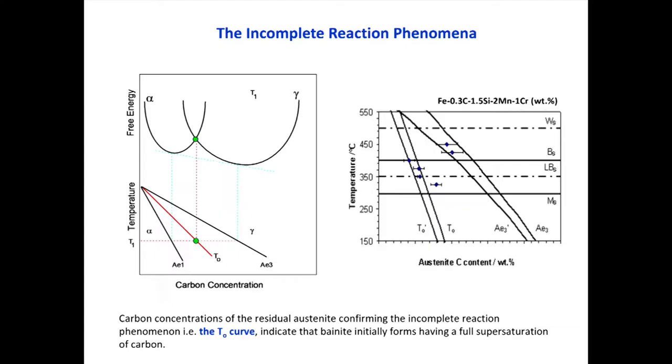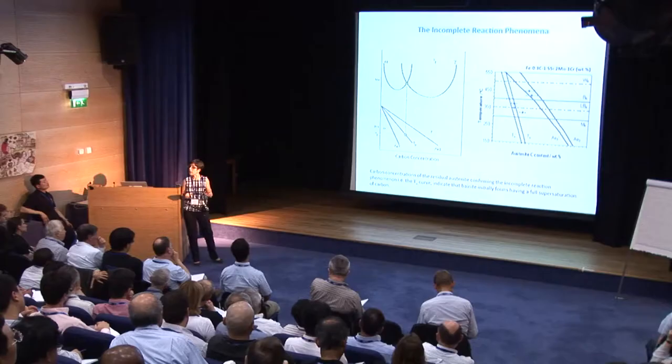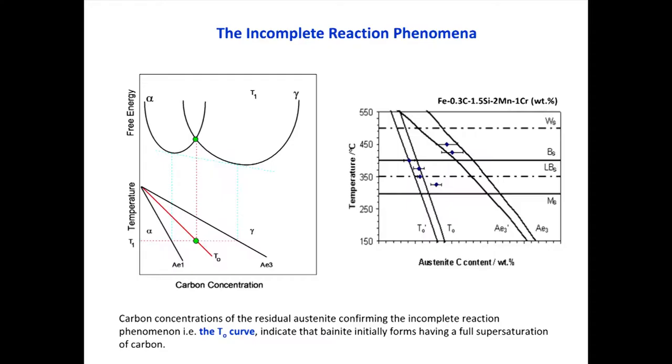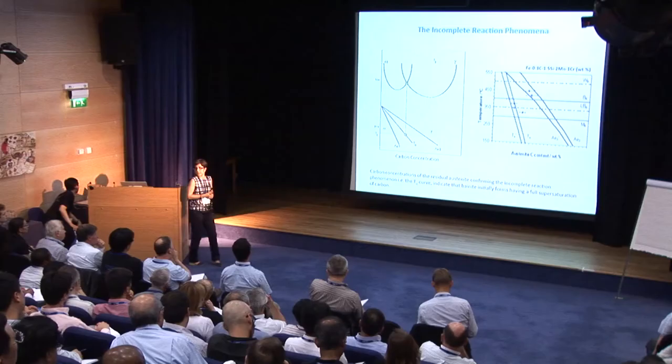The T0 line means that when the transformation has stopped and we have that carbon content, on a balance of free energy, transferring austenite to bainite ferrite of the same composition via a diffusion-less process would be thermodynamically forbidden — it would increase the free energy of the system, which we know is not possible. So even though we haven't approached the equilibrium and we still have retained austenite, the transformation will stop. This is the incomplete reaction phenomenon, and we have been validating the bainitic ferrite growth process by looking at this phenomenon.